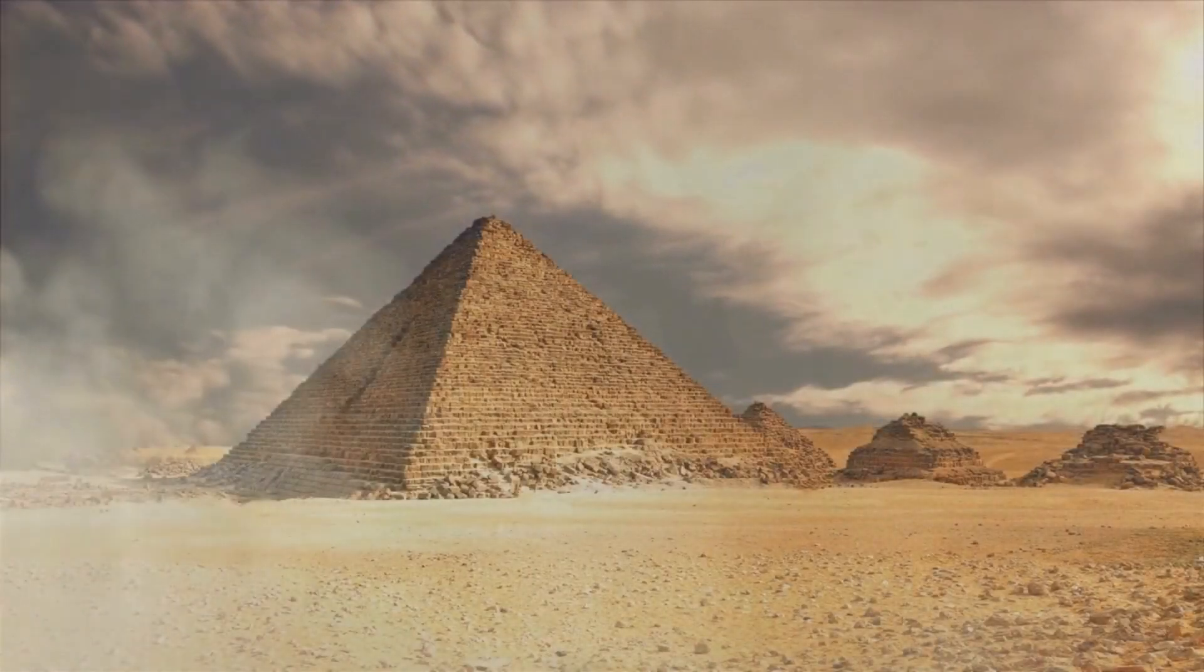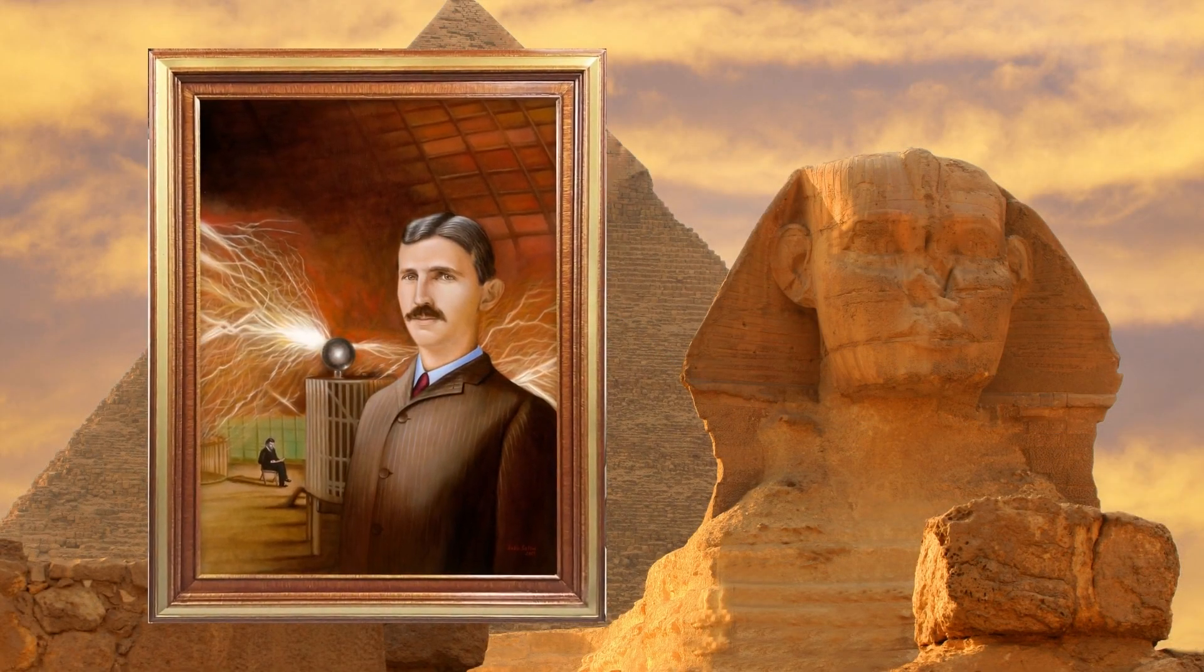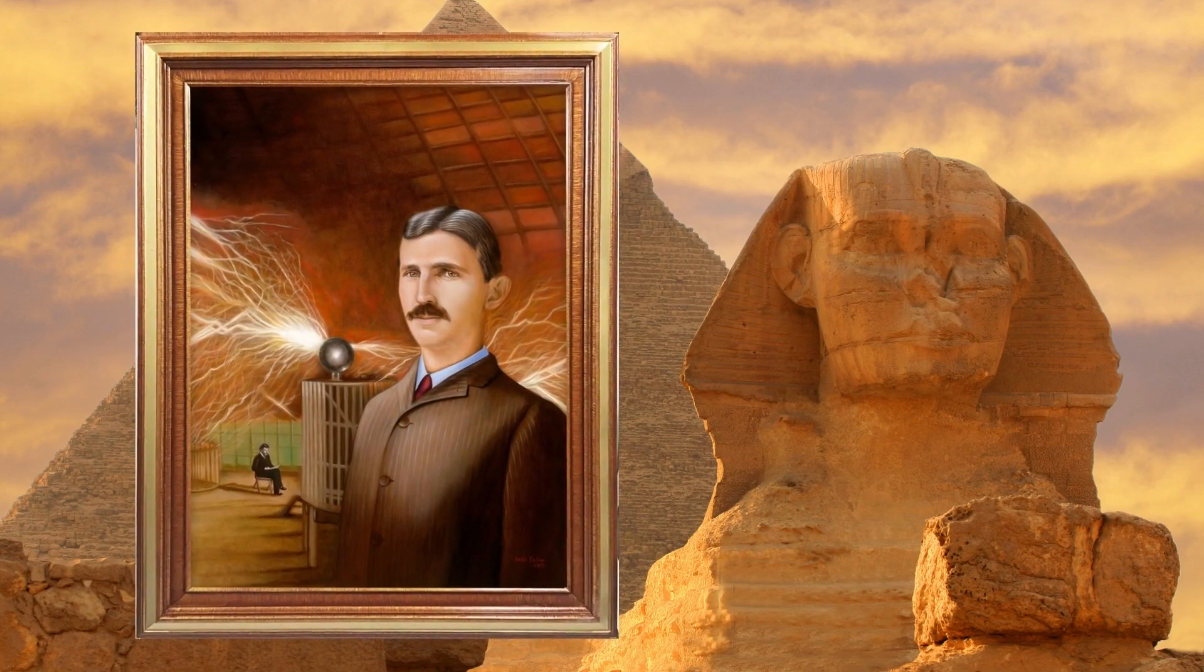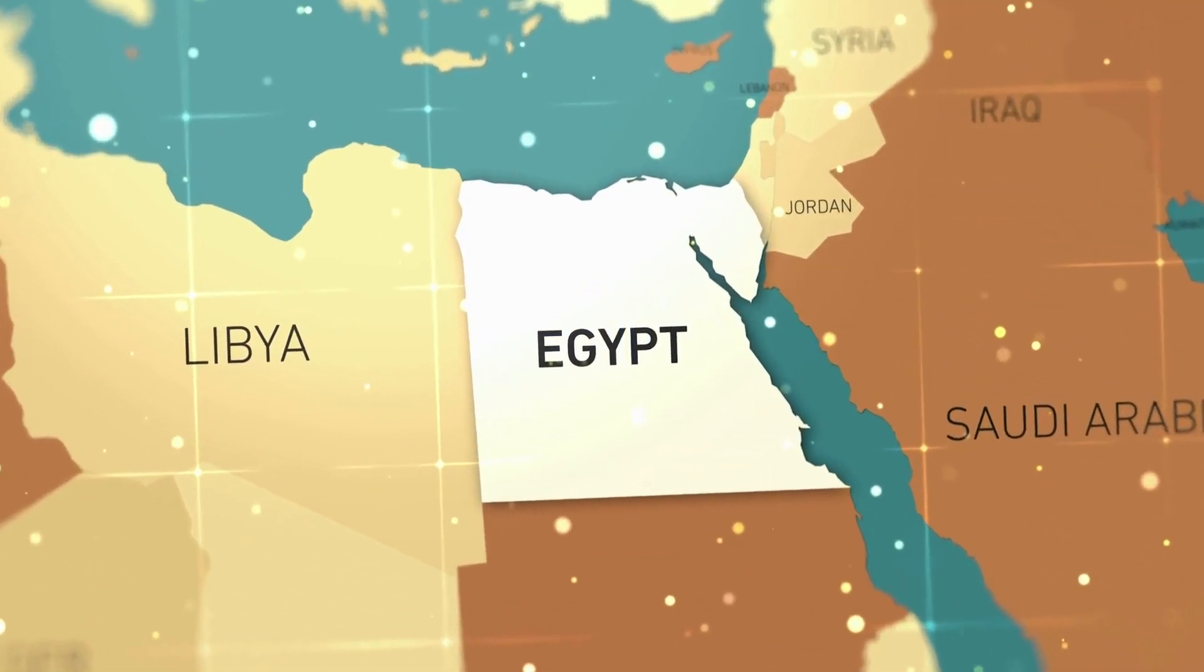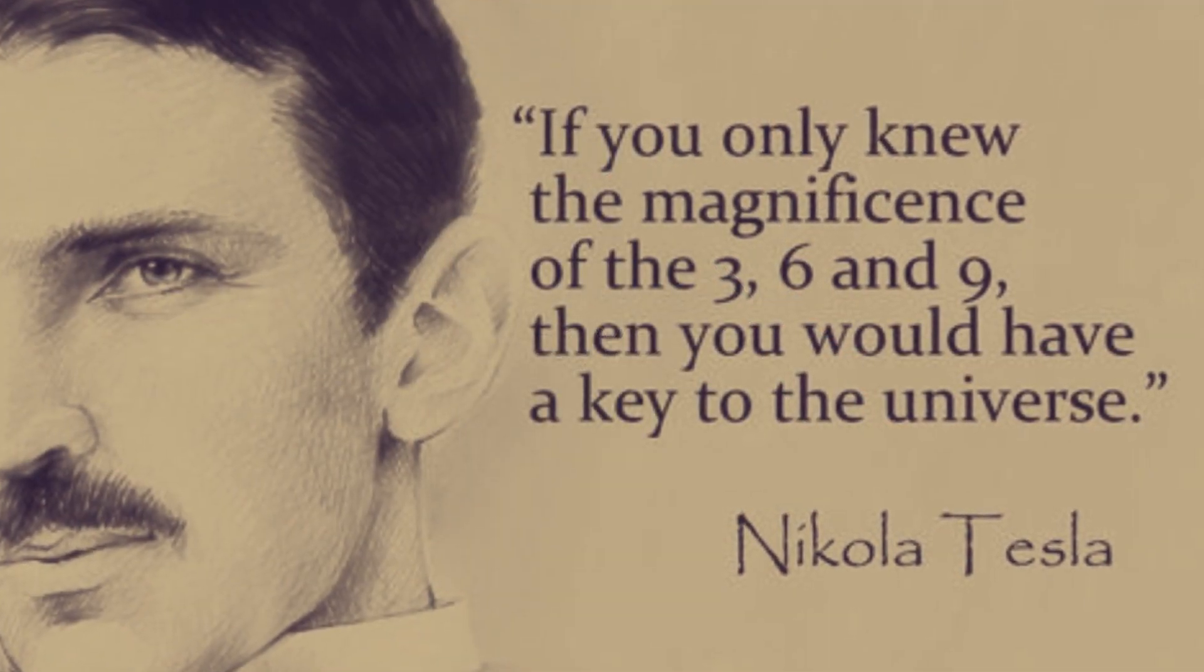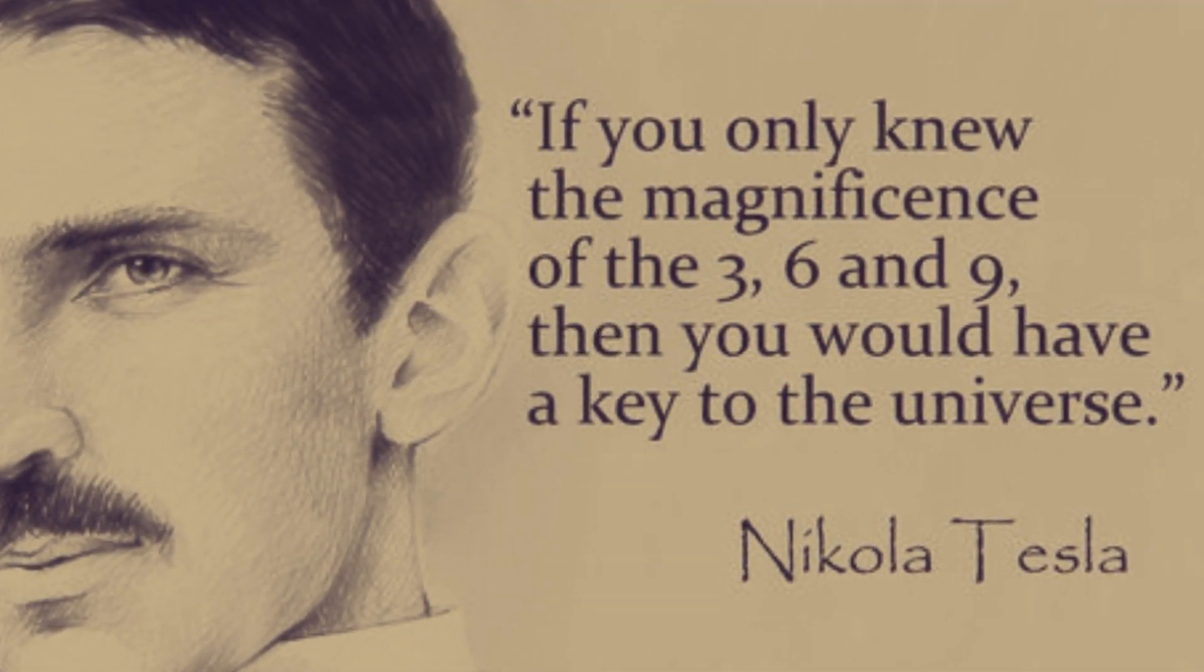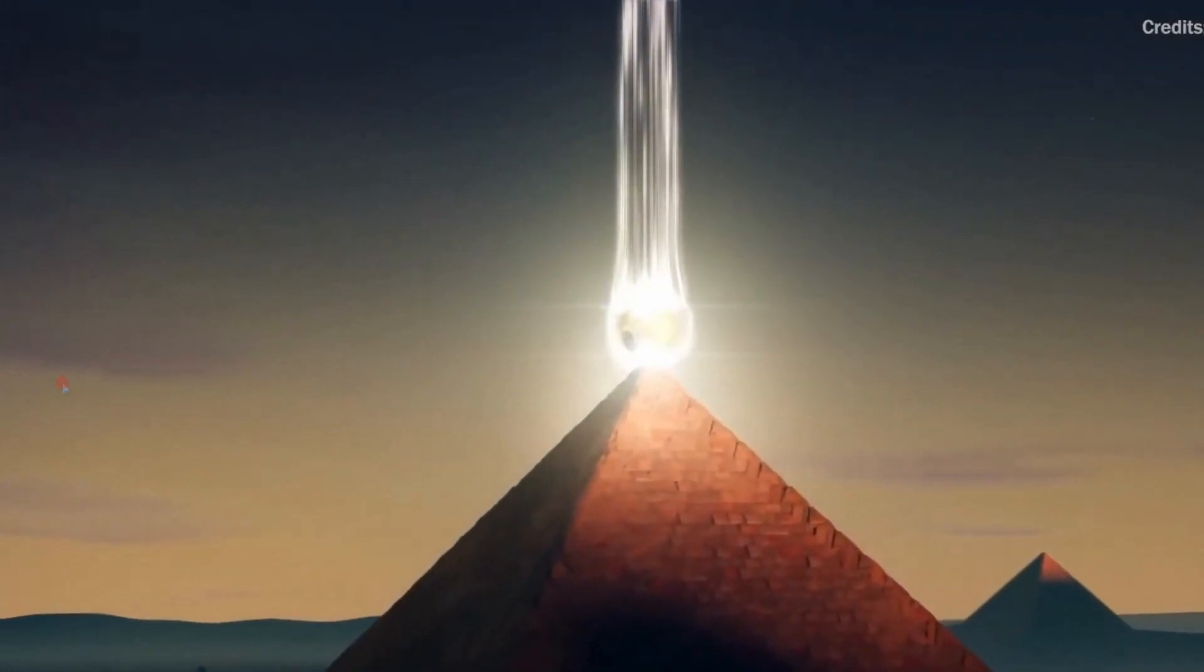Why Nikola Tesla was obsessed with the Egyptian pyramids. The inventor Nikola Tesla's esoteric beliefs included unusual theories about the Egyptian pyramids. Nikola Tesla had numerous unusual obsessions. One of his beliefs was that the great pyramids of Egypt were giant transmitters of energy.